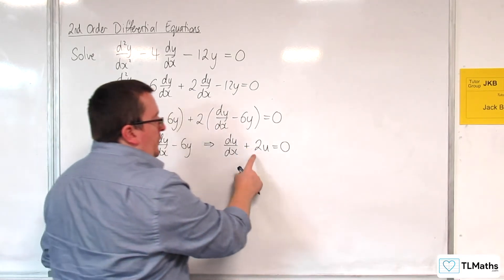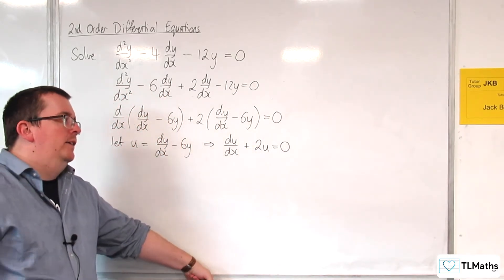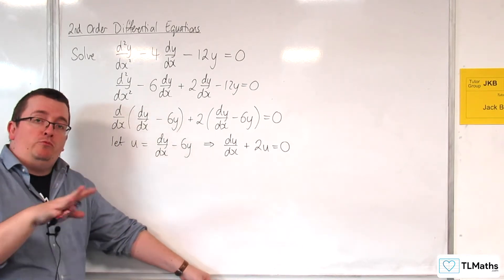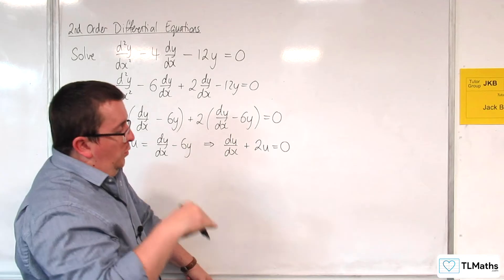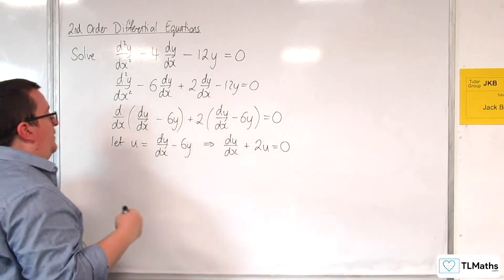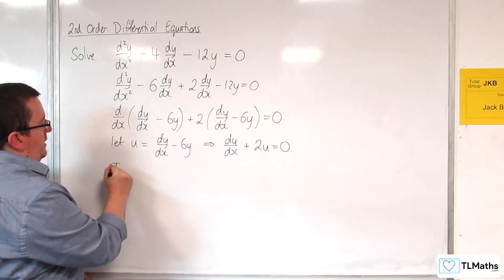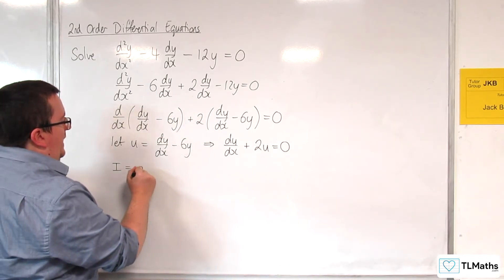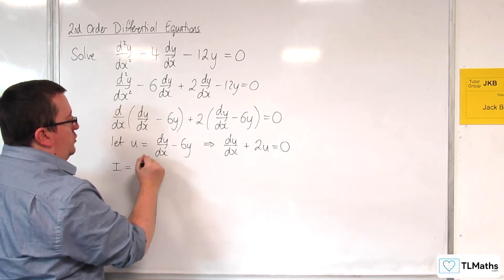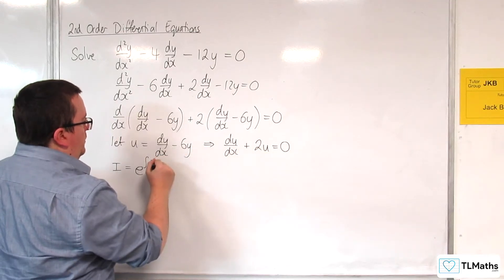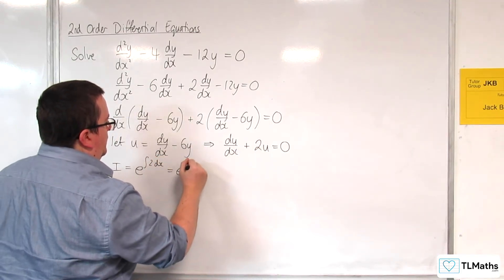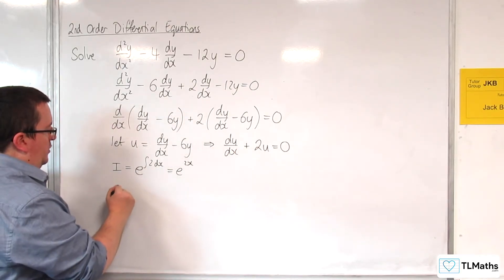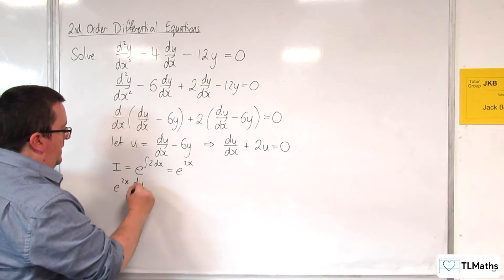Now, to solve this differential equation, I can use separation of variables or an integrating factor. I'm going to use an integrating factor. So the integrating factor would be e to the power of the integral of 2dx, which is equal to e^(2x).